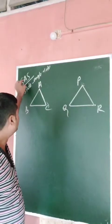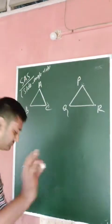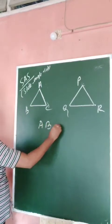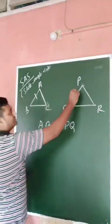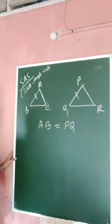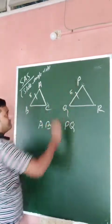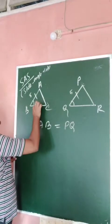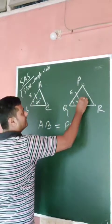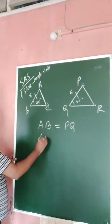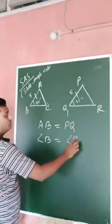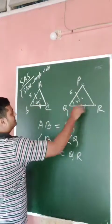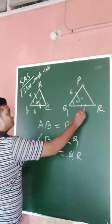Look at triangle ABC and triangle PQR. Suppose AB equals PQ — say both are 5 cm. Suppose angle B equals angle Q — say both are 45 degrees. And suppose BC equals QR — say both are 6 cm.